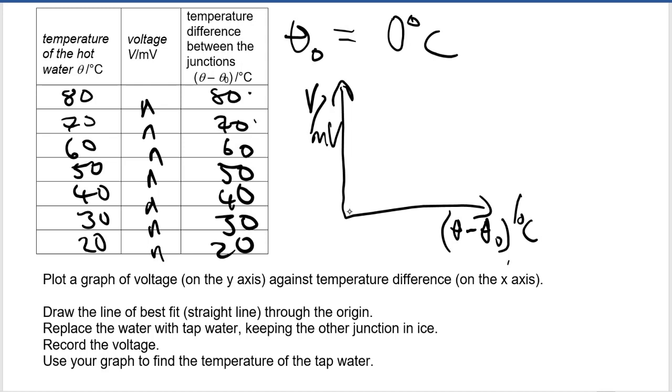So you're going to get a straight line graph that passes through the origin. Once you've done this, you can now use this graph as a calibration curve. Here we can have our 10, 20, 30, 40, 50, 60, 70, and so forth. And then the readings of the voltage corresponding to that will give you these points that help you find the line of best fit.